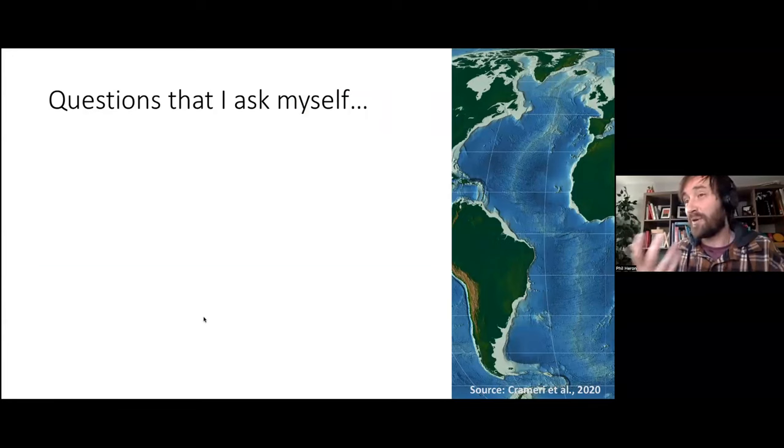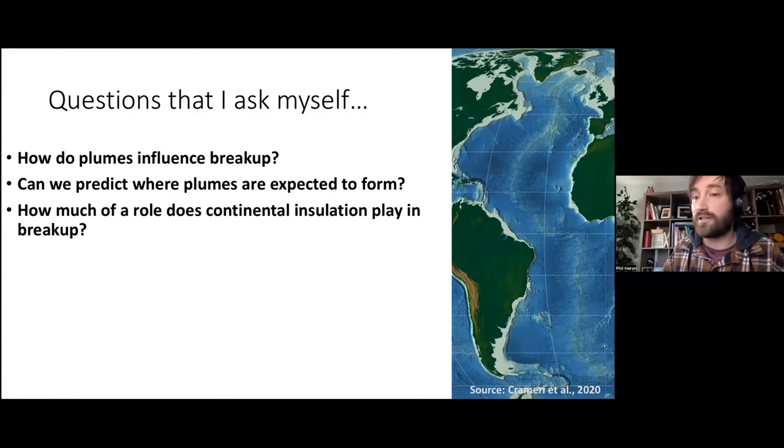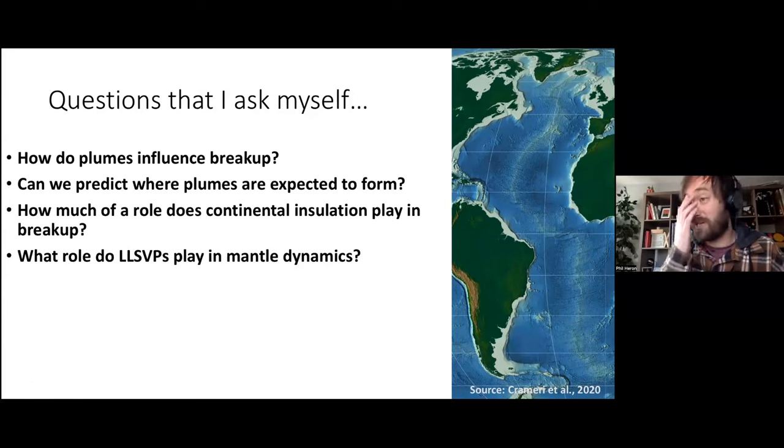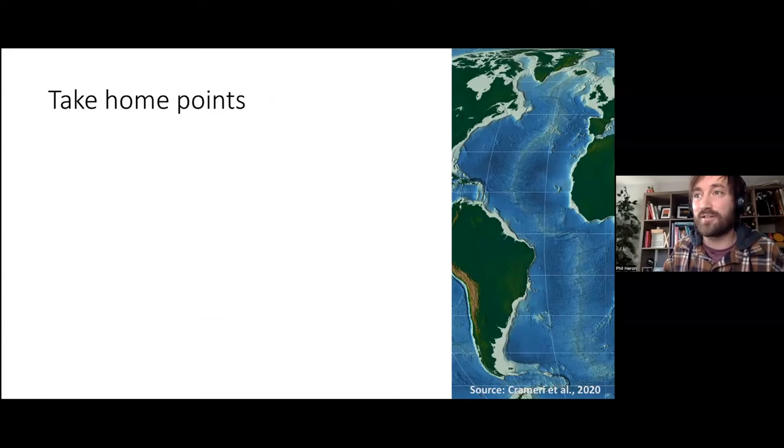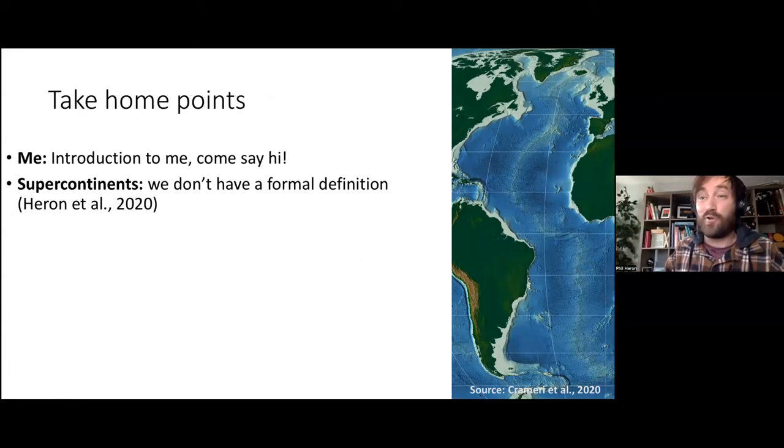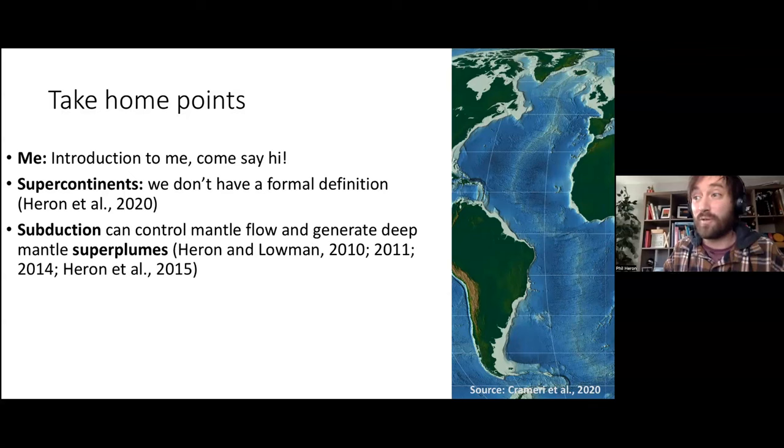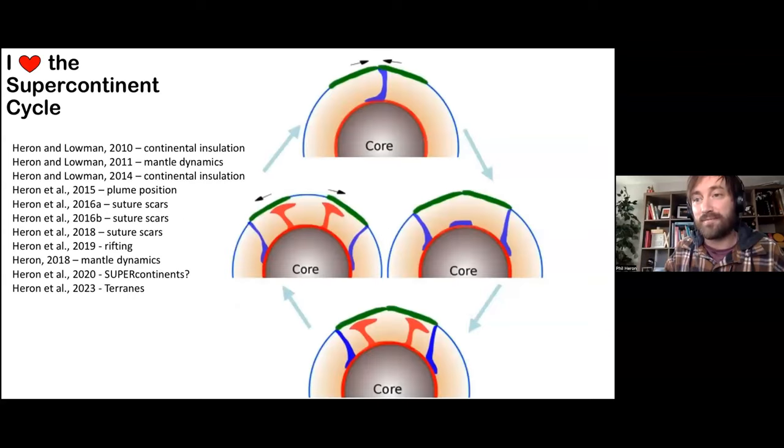To wrap up, questions that I asked myself: How do plumes influence breakup? Can we predict where plumes are expected to form? How much of a role does continental insulation play in breakup? How much of a role do large low shear velocity provinces play in mantle dynamics? How do we define a supercontinent? Lots of modeling questions and talks about sutures and scars. A couple of takeaway points from this talk as a summary: introduction to myself, hello. We don't have a formal definition of a supercontinent. Subduction can potentially control mantle flow and generate deep superplumes. Oceanic LIPs could form through circum-supercontinent subduction backflow. But you will always remember, I think, from this talk if nothing else, my terrible drawings. I do love the supercontinent cycle. There's lots going on here: there's breakup, there's continental collisions, there's sutures, there's subduction. I think there's a real lot we can do and I'm happy to take any questions on it.